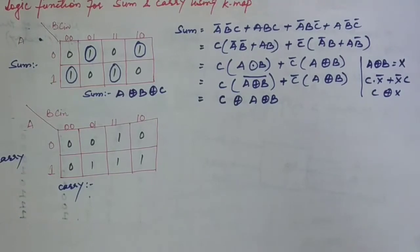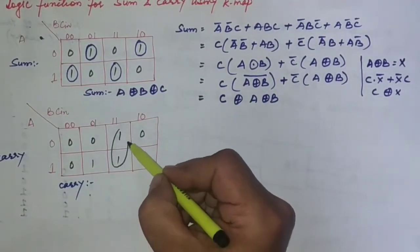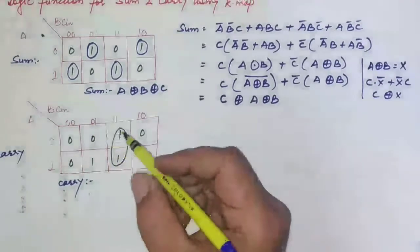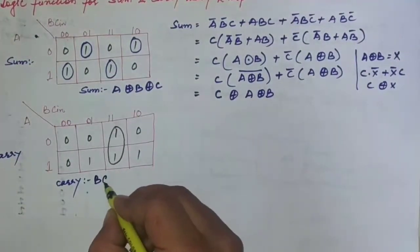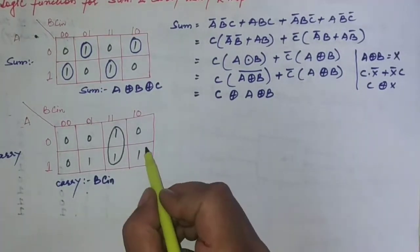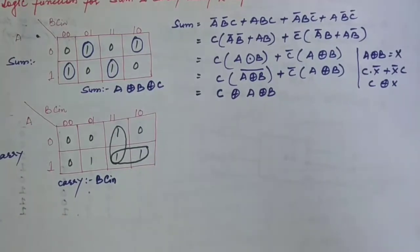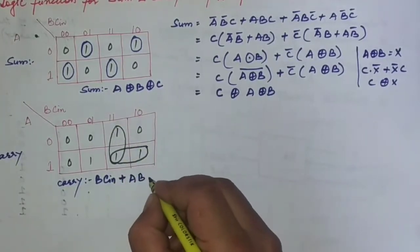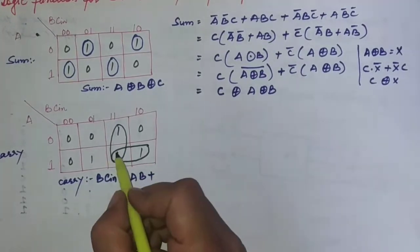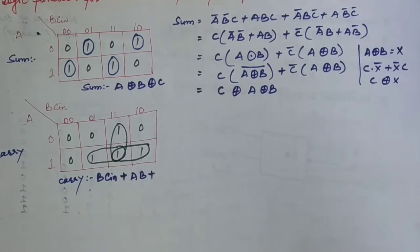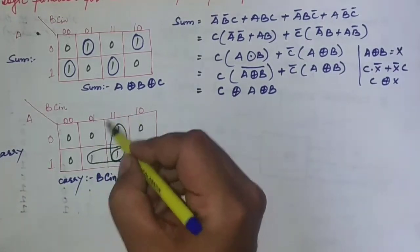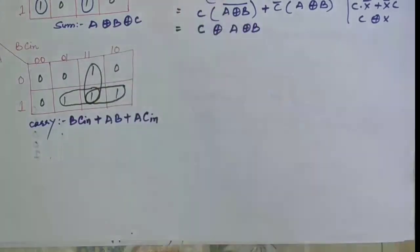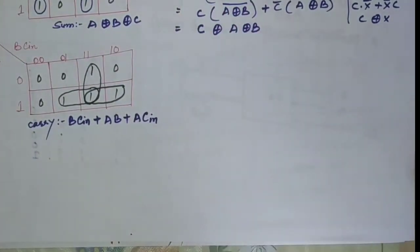For the carry K-map, we can form groups. The first group gives B·C_in, the second group gives A·B, and the third group gives A·C_in. So the minimized carry expression is: C_out = B·C_in + A·B + A·C_in. These are the minimized logic functions derived using K-maps.